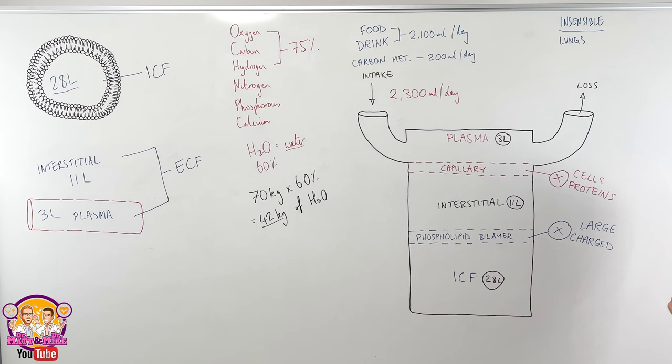And this fluid, water can move from plasma to interstitial, no problem. From interstitial to intracellular fluid, no problem. But there are things that influence the movement of water from these compartments, which is the most important. These predominantly are ions. Sodium, potassium, magnesium, chloride, for example, they influence the way water moves inside and outside of the cell and between these compartments. How? Let's take a look.